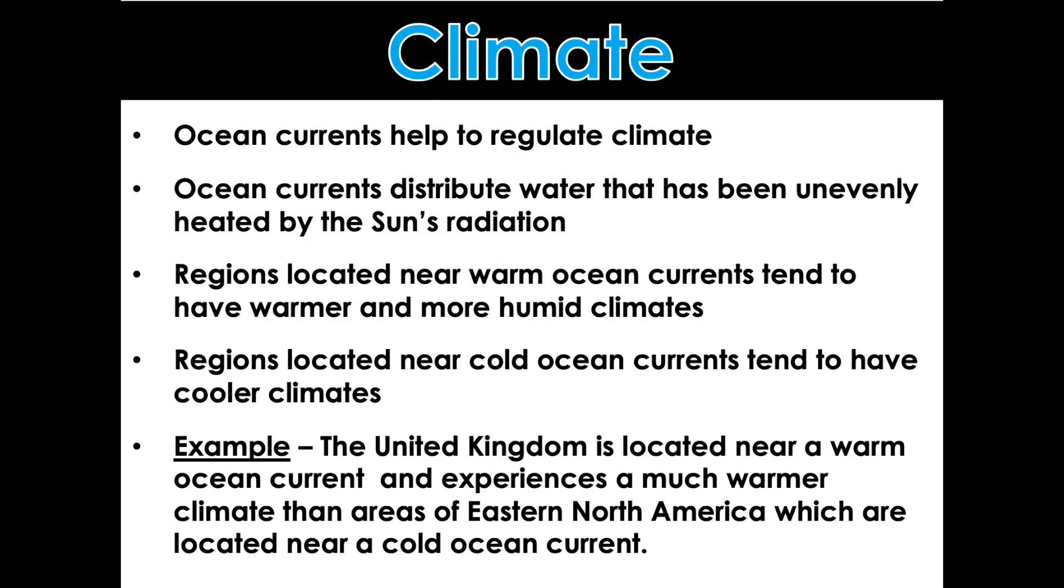Climate. Ocean currents are going to help regulate climate. So, the currents distribute water that has been unevenly heated by the sun's radiation. Convection is caused by uneven heating. The colder water is going to sink. The warmer water is going to rise. The regions located near warm ocean currents tend to have warmer and more humid climates. Think Houston. Houston is very humid. It's near that Gulf of Mexico that is a very warm source of water. Regions located near cold ocean currents tend to have cooler climates. So, for example, the United Kingdom is located near a warm ocean current and experiences a much warmer climate than areas of eastern North America, Georgia, which are located near a cold ocean current.